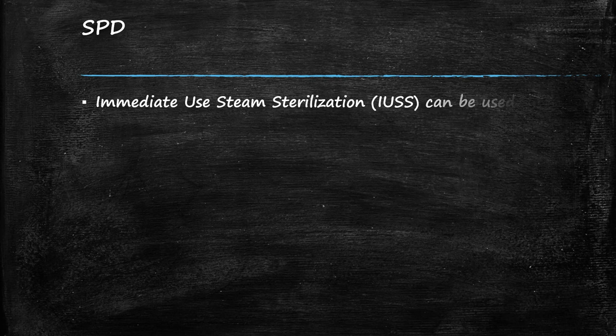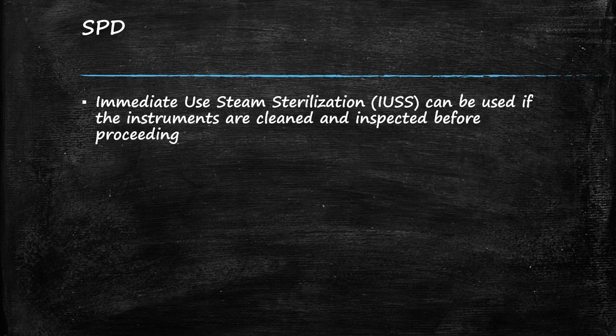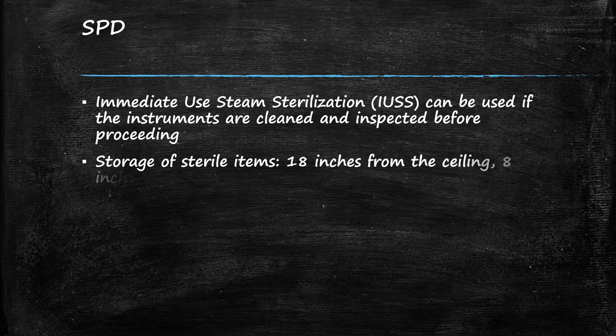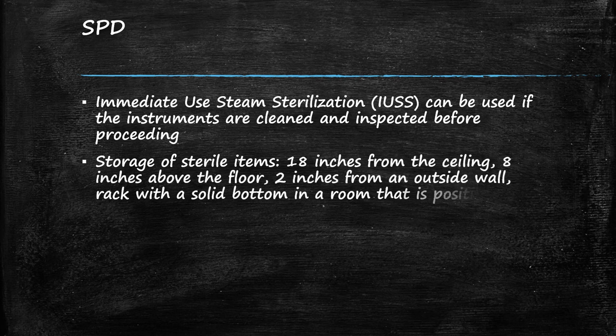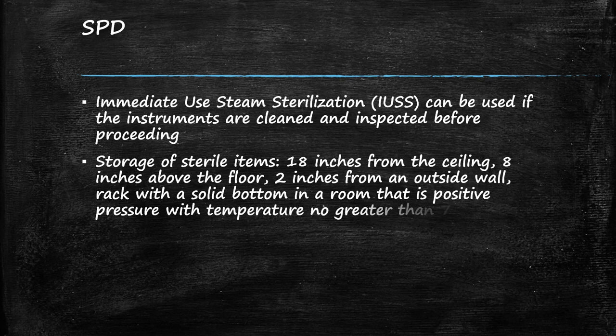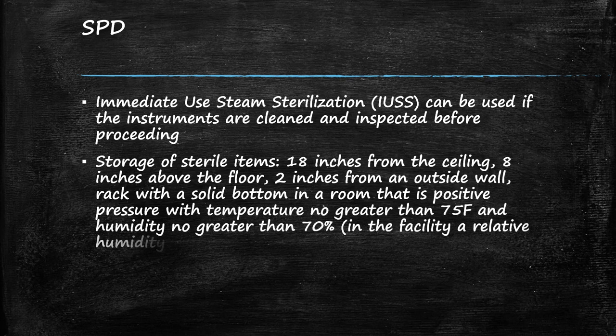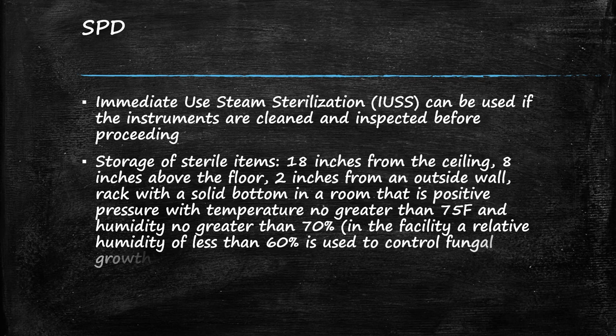IUSS can be used if the instruments are cleaned and inspected before proceeding. Storage of sterile items must be 18 inches from the ceiling, 8 inches above the floor, and 2 inches from an outside wall. The rack must have a solid bottom in a room that has positive pressure with a temperature no greater than 75 degrees Fahrenheit and humidity no greater than 70 percent. In the facility, a relative humidity of less than 60 percent is used to control fungal growth.